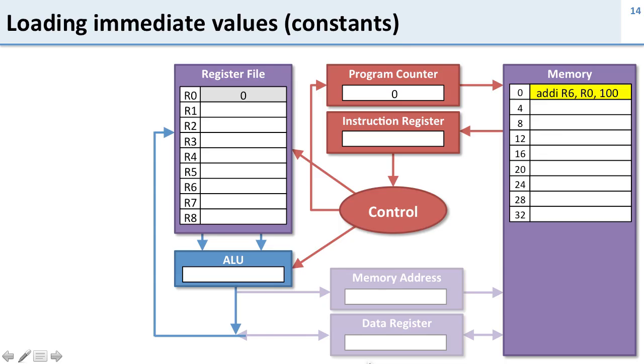So now let's take a quick look at how these immediate values work. You've seen this before, and now we're going to walk through it now that you know how they're encoded in the instruction. So here's our instruction add I R6, R0, and 100.